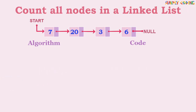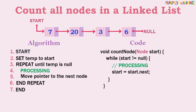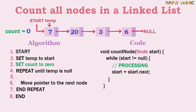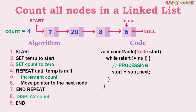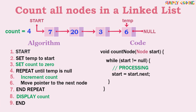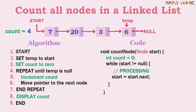The next program is to count all nodes in a linked list. Here also we will use our standard traversal loop. Before we start the traversal we initialize a count variable to zero. In the traversal loop we just increment the count. Once traversal is complete we display the count. In code, we declare count as zero, increment count every time we visit a node in the while loop, and write a System.out.print statement to print the count.